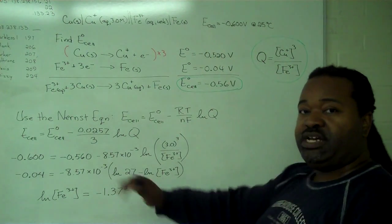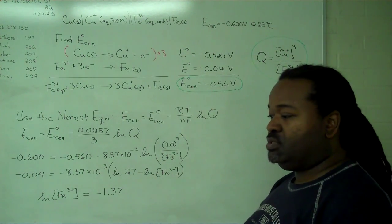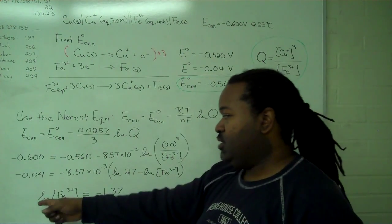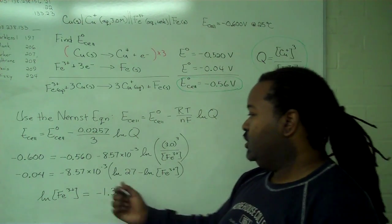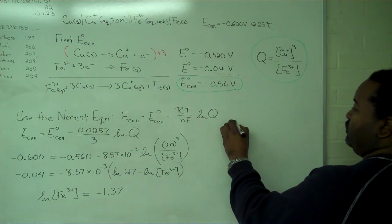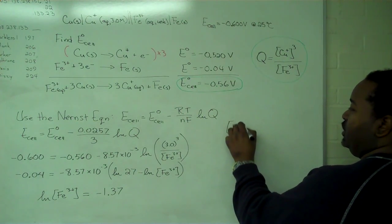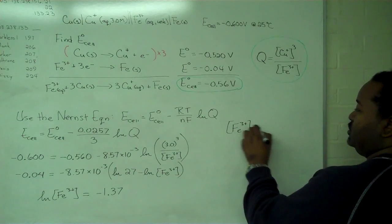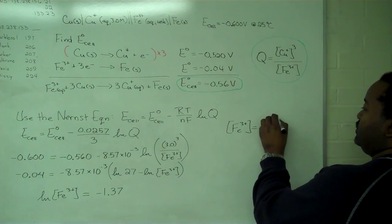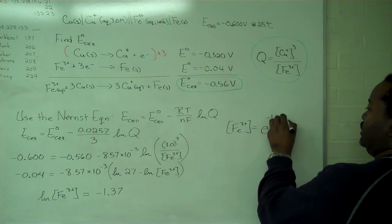In order to remove the natural log, we're going to use the exponential. So e to the ln of anything is just that quantity. So we're left with the following to solve: iron 3 plus concentration is equal to e raised to the minus 1.37.